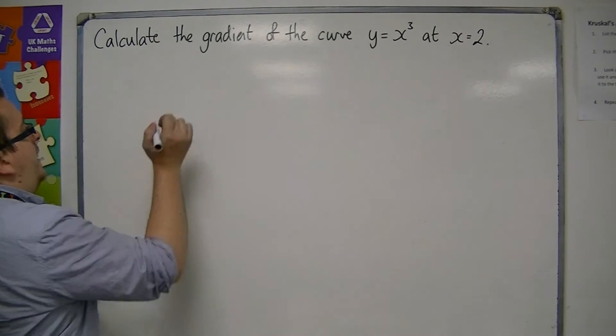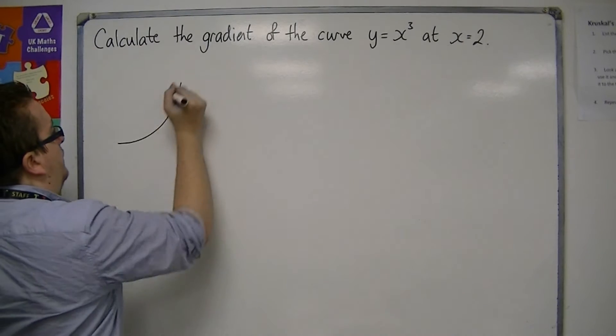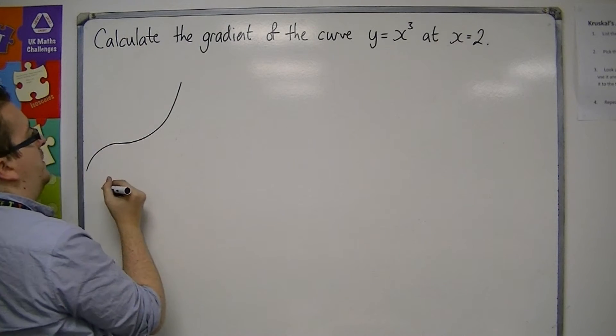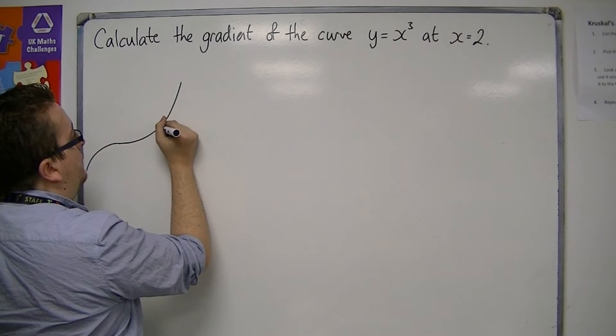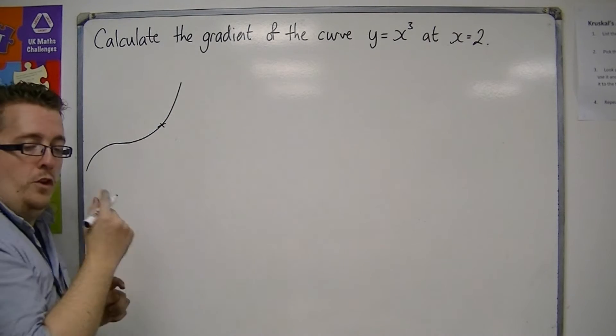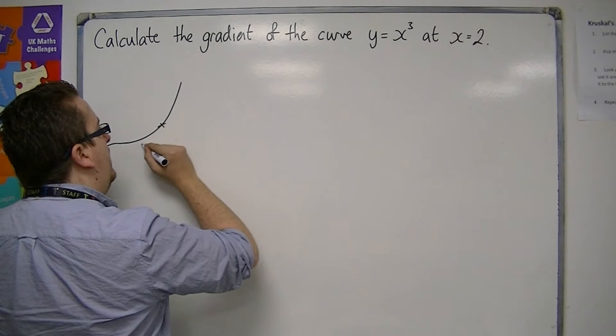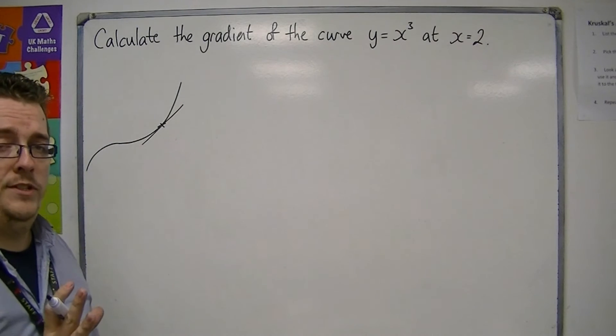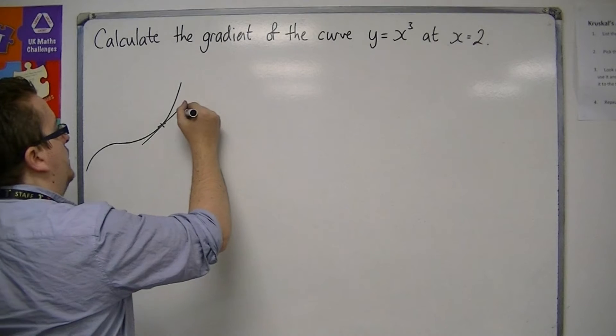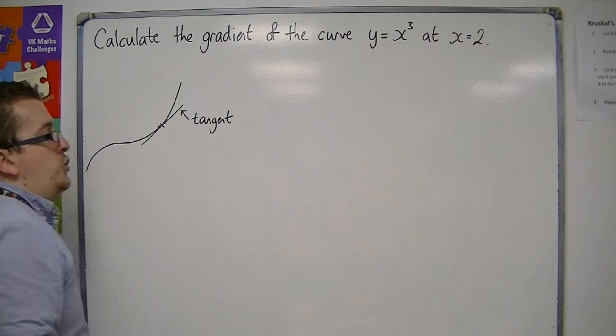So in other words, what we're looking at is this curve, y equals x cubed, something like that. And at x is equal to 2, we want to know what the gradient of that curve is. So actually, what we're doing is we're finding the gradient of the tangent at that point. So the tangent to the curve.